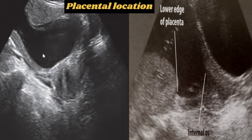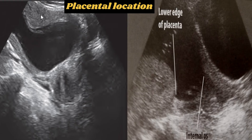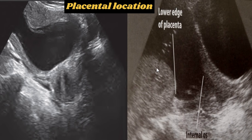Now we are going to discuss the relationship of the placenta to the internal cervical os. This is the longitudinal transabdominal image of the gravid uterus. The placenta is present anteriorly and away from the cervical os. In another image, the placenta is present on the posterior wall, just at the margin of the internal cervical os — this type is called the marginal placenta. The bladder is also visible in the sonogram.